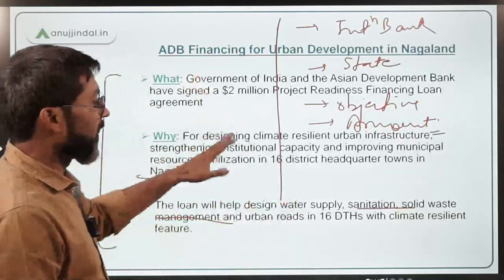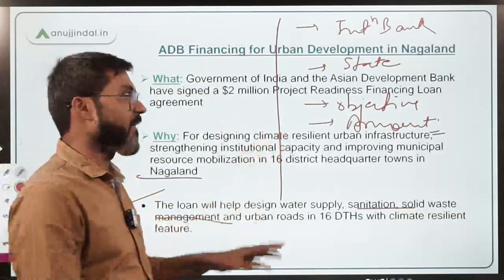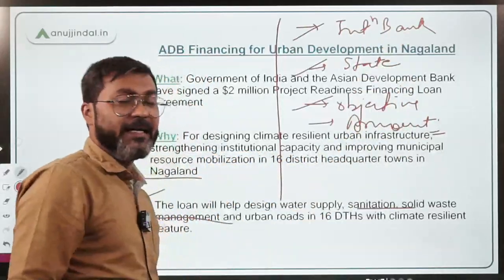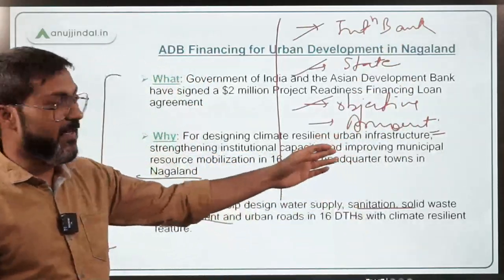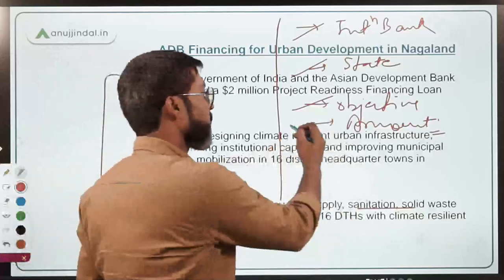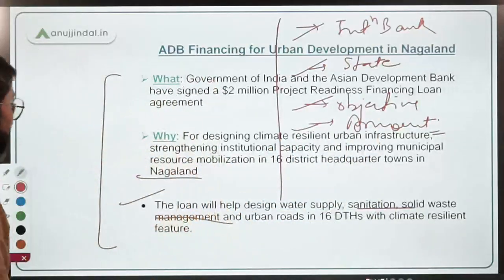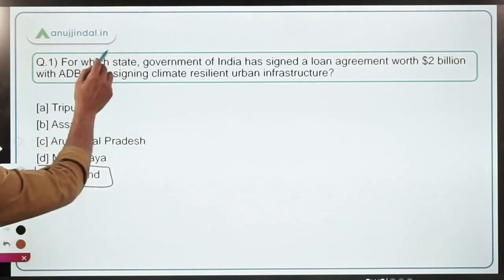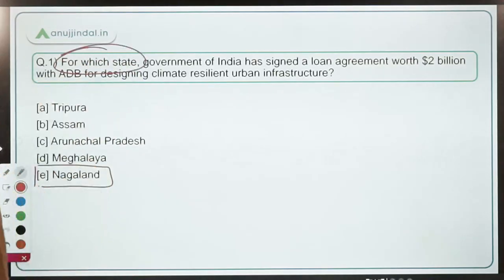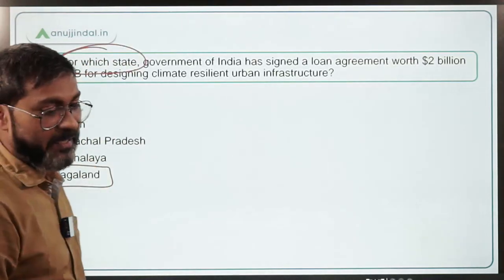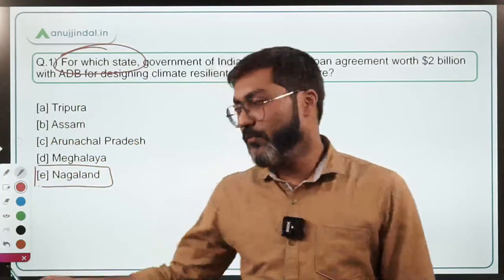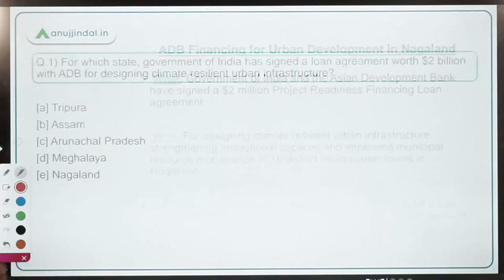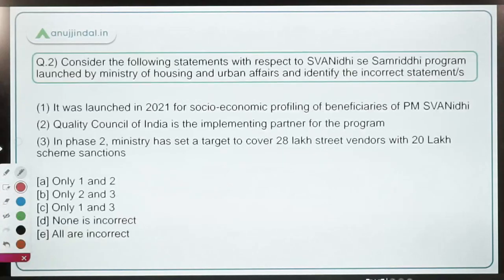This loan was signed with the Asian Development Bank for Nagaland, for building climate-resilient urban infrastructure, worth two billion dollars. The correct answer is option E — Nagaland. Nagaland's Chief Minister is Neiphiu Rio and its capital is Kohima.